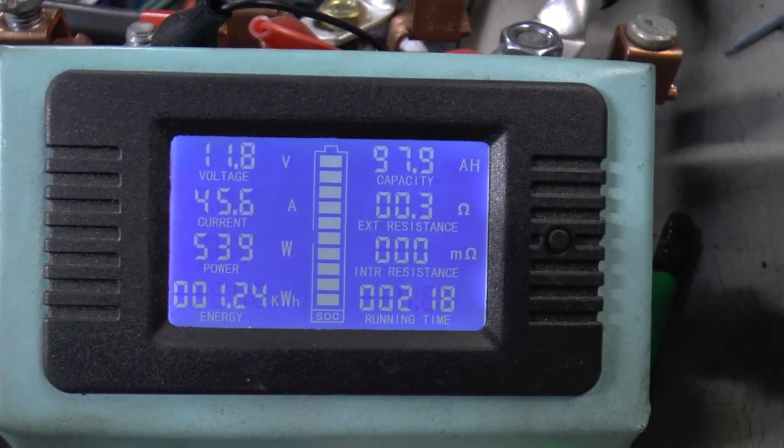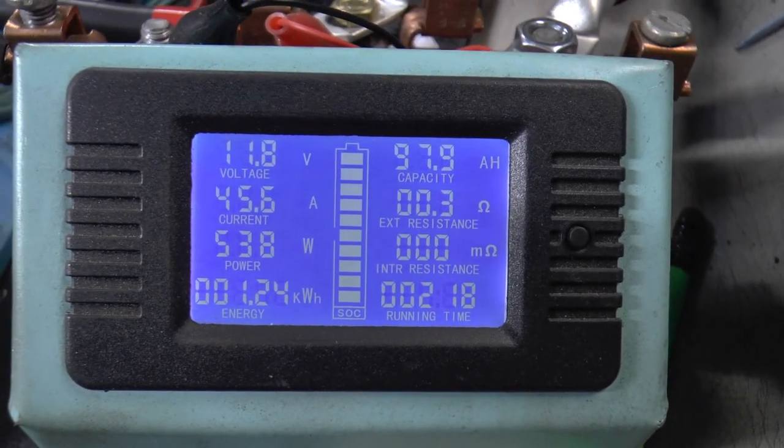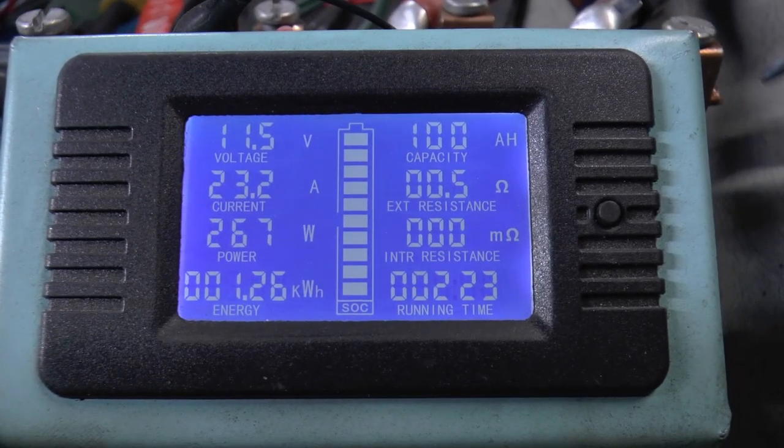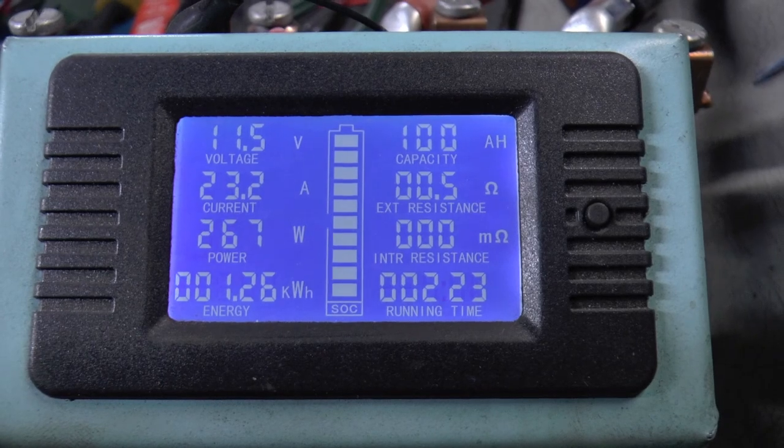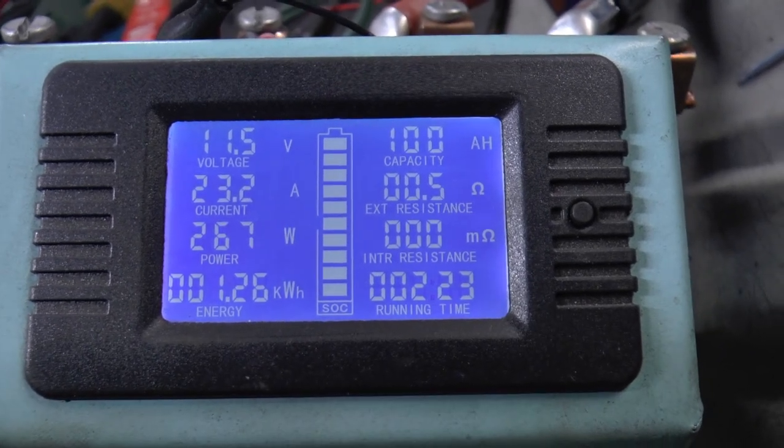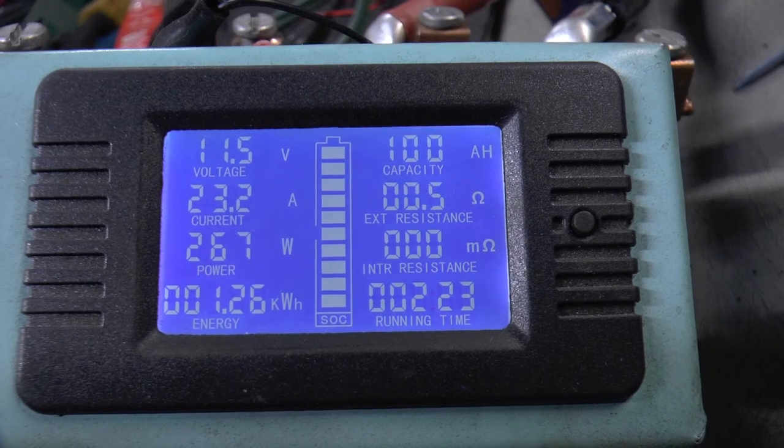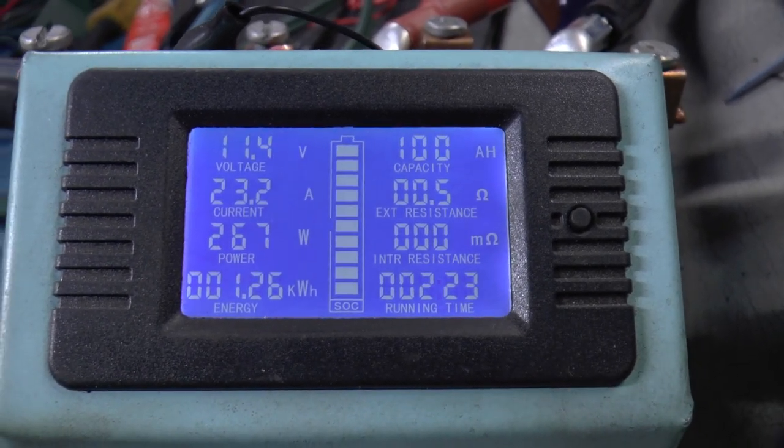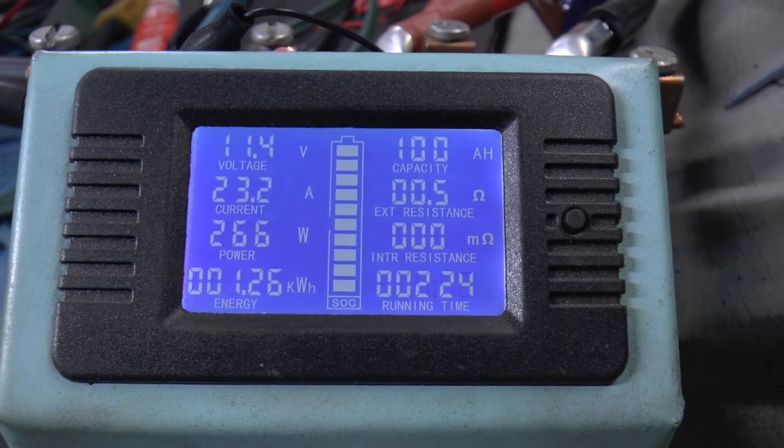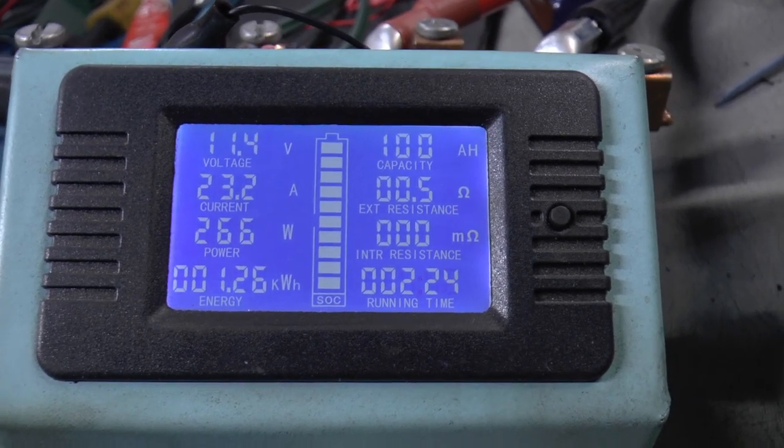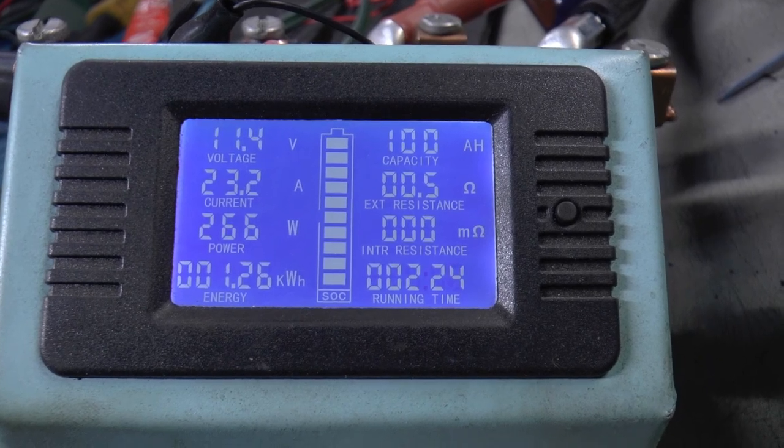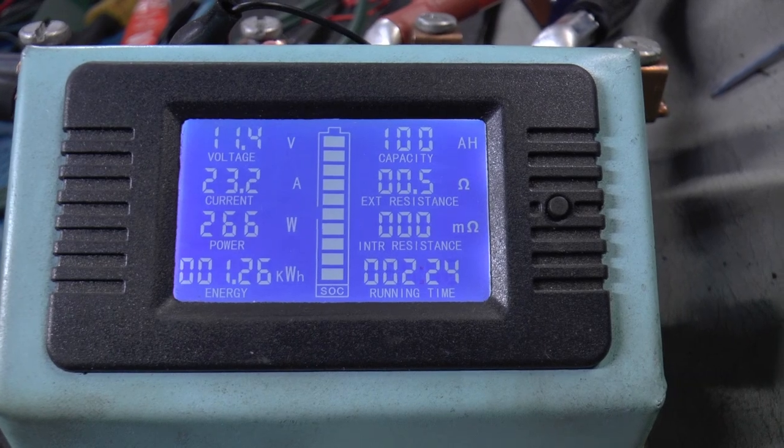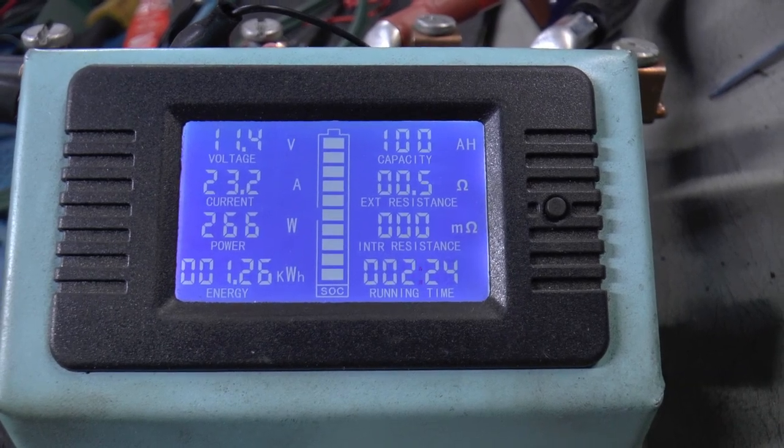Okay, battery number two coming in the home stretch. Just as I turned the camera on, it went to 100 amp hours. We're still at 11.5 volts on this one though. I think we're gonna get more than 100 out of this one. When she gets down to the 10 volt area, I'll turn you back on.